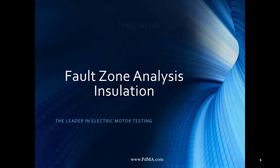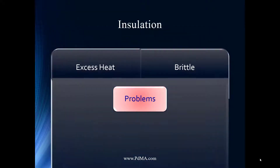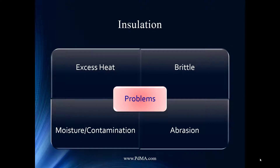Some of the problems we see with insulation include excess heat, brittleness, moisture, and abrasion. Noah: I always like to start with heat. Heat is considered the number one killer of a motor, and it really falls on the insulation as the final fault mode. We've got to maintain heat within the motor design. That heating, through expansion and similar effects, will create embrittlement issues over time.